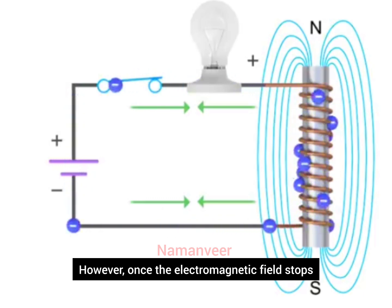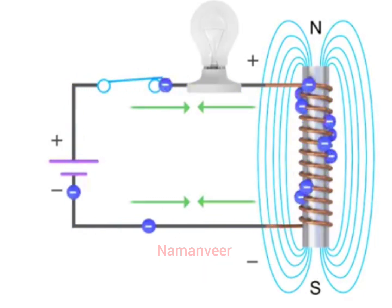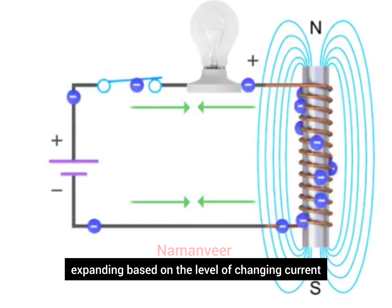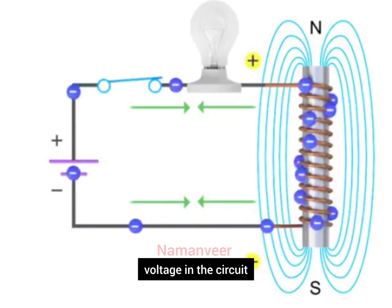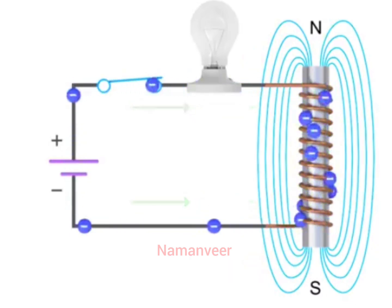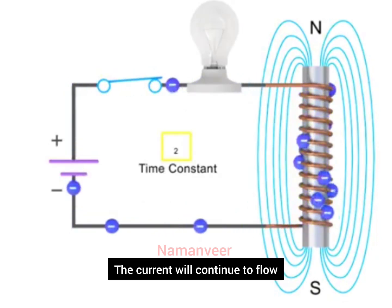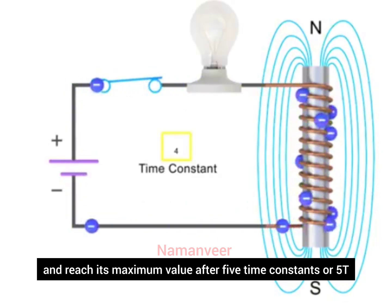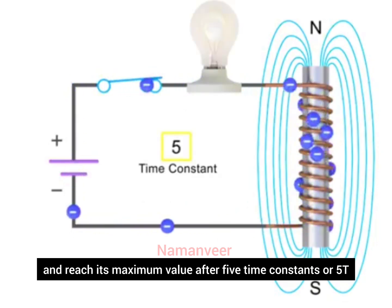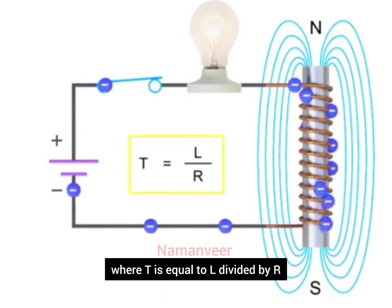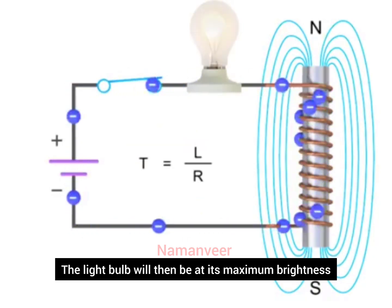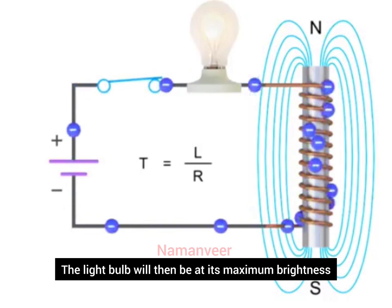However, once the electromagnetic field stops expanding based on the level of changing current, the flux will no longer generate an opposing voltage in the circuit. The current will continue to flow and reach its maximum value after five time constants, or 5t, where t is equal to L divided by R. The light bulb will then be at its maximum brightness.